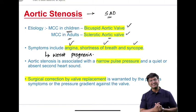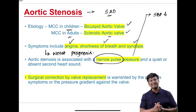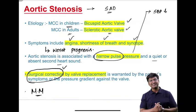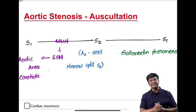On physical examination in aortic stenosis, patients have a narrow pulse pressure because systolic blood pressure is reduced. The second heart sound is quiet or absent. Asymptomatic patients can be managed medically, but symptomatic aortic stenosis requires surgical correction — either transcatheter aortic valve replacement (TAVR) or surgical aortic valve replacement.